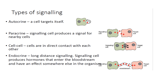To recap the types of signaling: autocrine signaling is where the cell targets itself; paracrine signaling is where a signaling cell produces a signal for nearby cells; juxtacrine or cell-to-cell signaling is where cells are in direct contact with each other; and endocrine signaling is long-distance signaling where the signaling cell produces hormones which enter the bloodstream and have an effect somewhere within the organism.